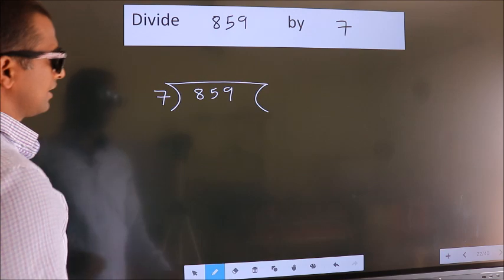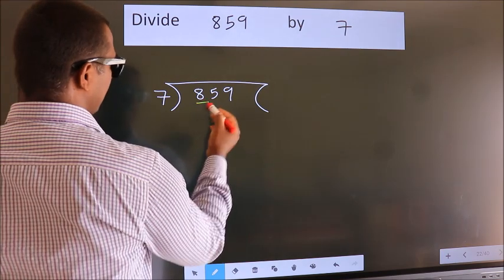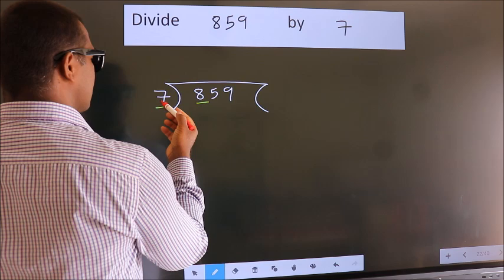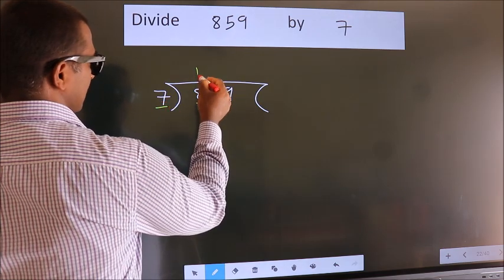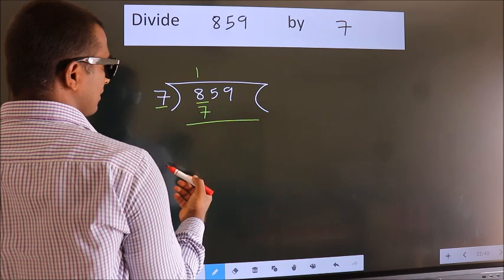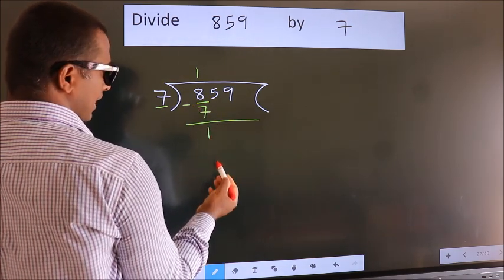Next. Here we have 8, here 7. A number close to 8 in 7 table is 7 once 7. Now we should subtract. We get 1.